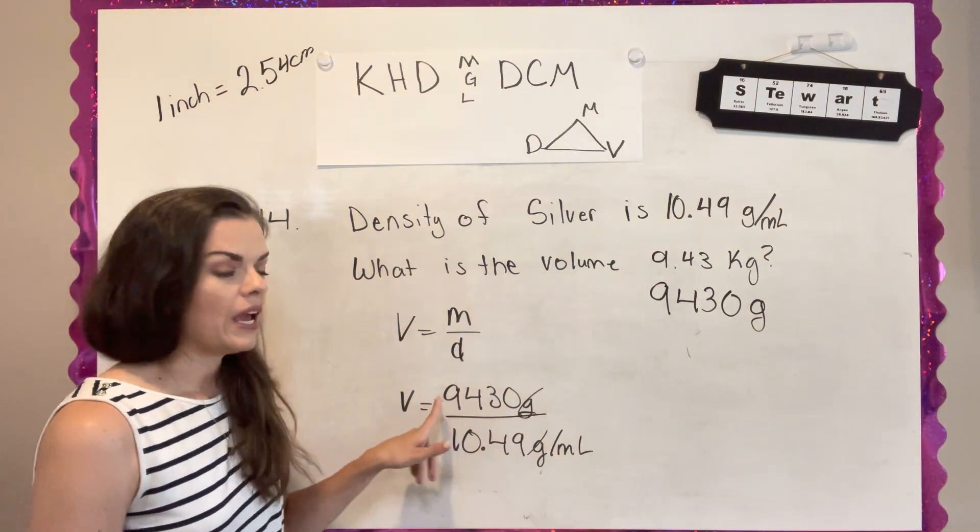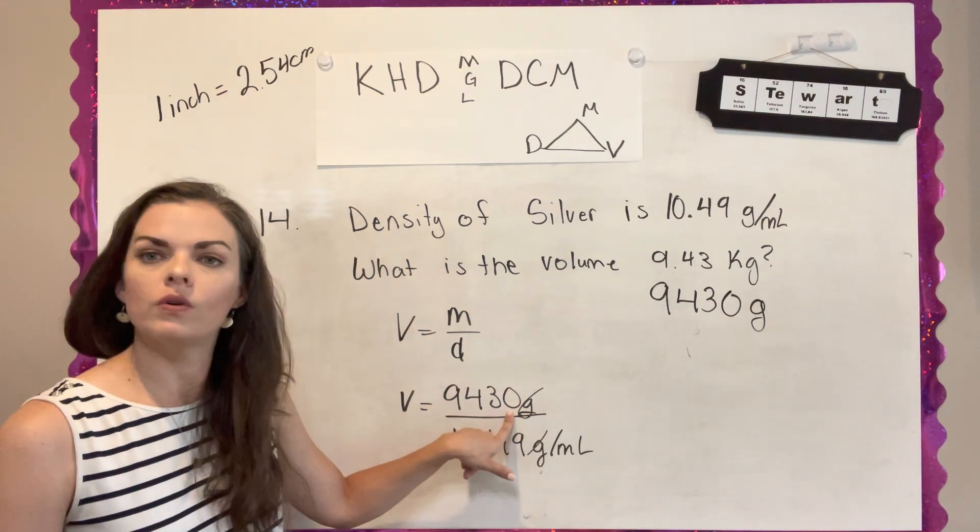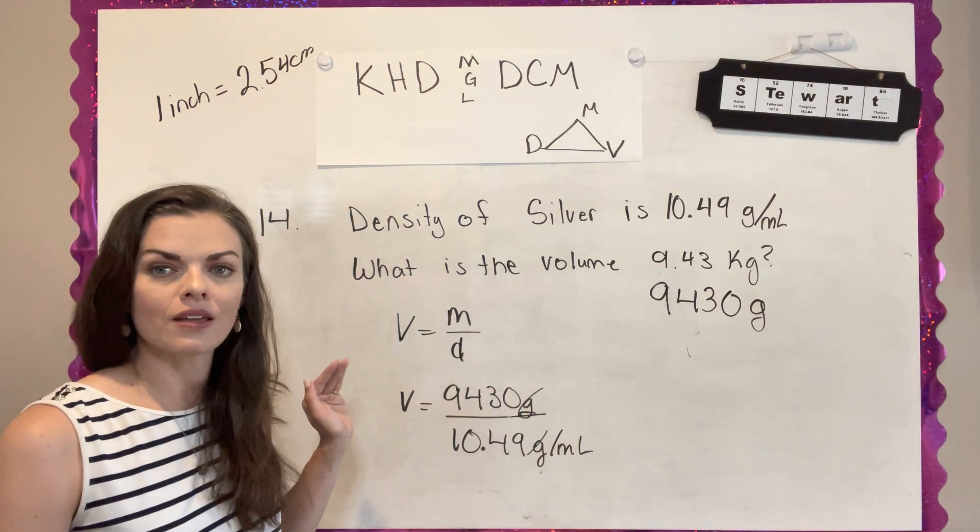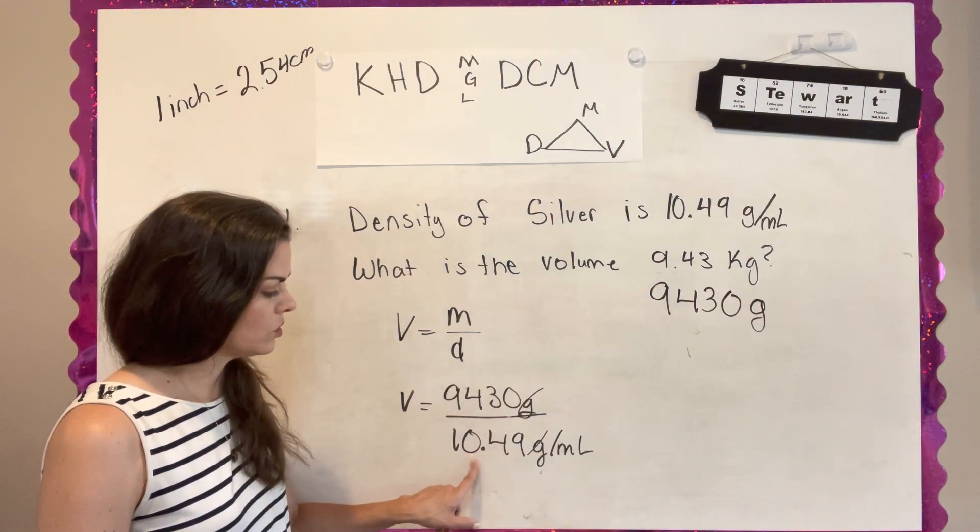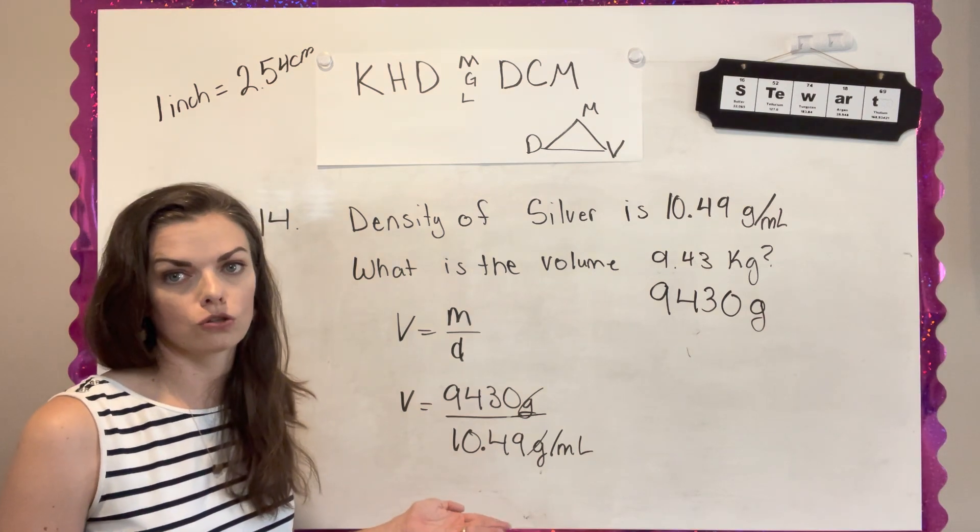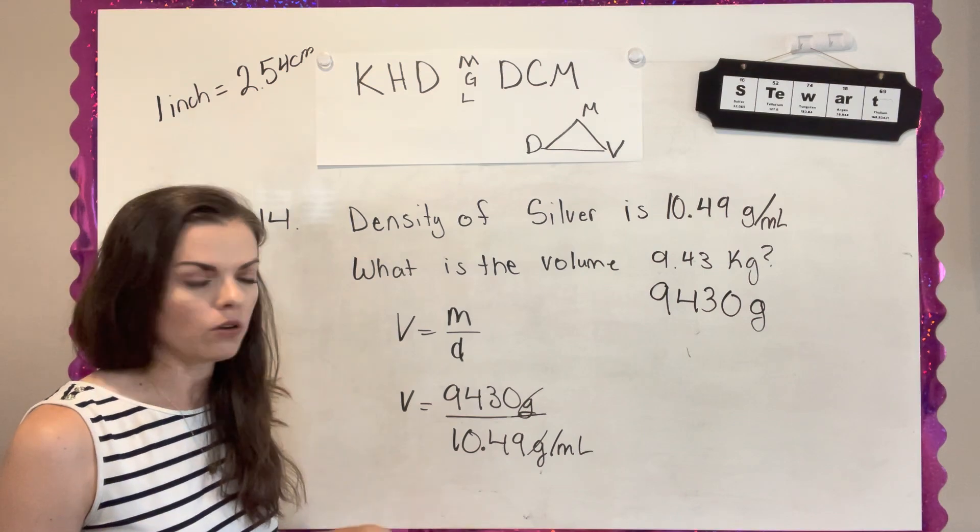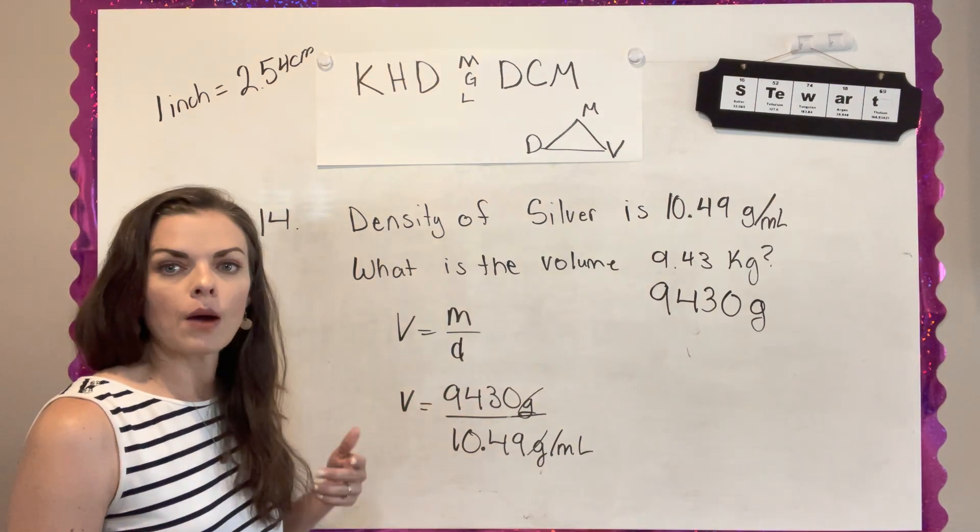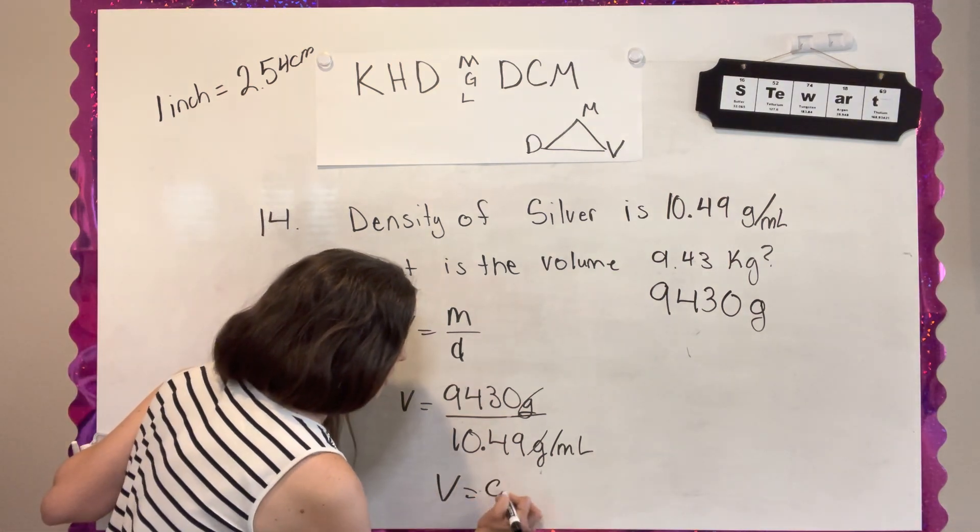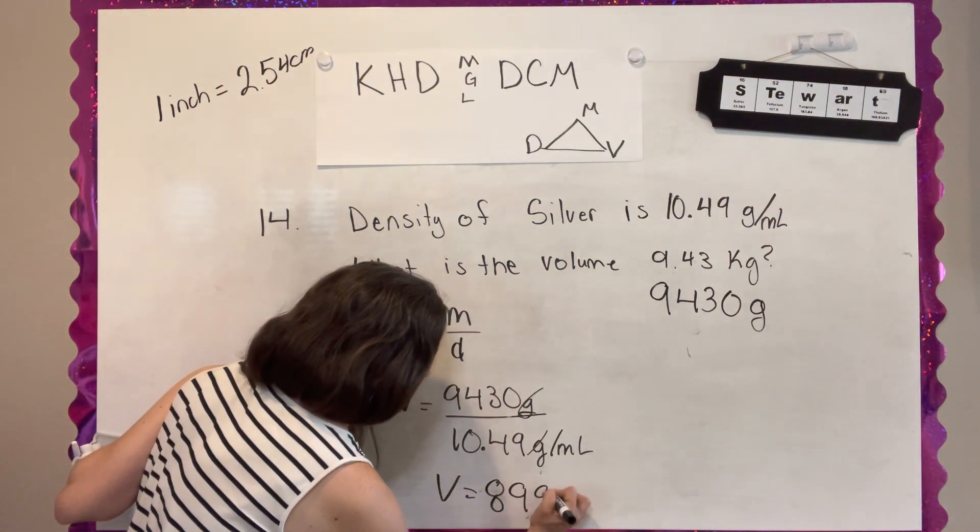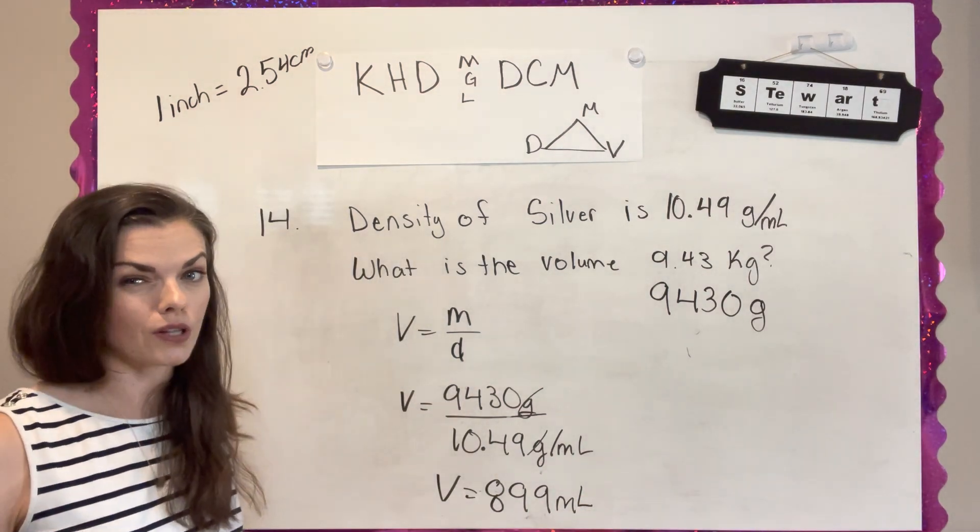And now I need to know how many significant figures I'm going to report my answer to. So this measurement has 1, 2, 3 significant figures. This zero is not significant because it is not the last number to the right of a decimal. And this number has 1, 2, 3, 4 significant figures. So when you're doing multiplication or division, you're going to report your answer to the least amount. So since I have a three and a four, I'm going to make sure I only have three significant figures in my answer. Volume here equals 899 milliliters of silver. It's actually a lot of silver.